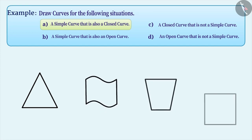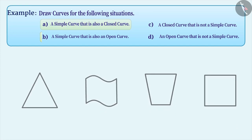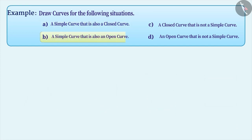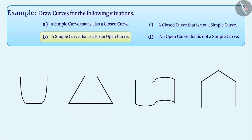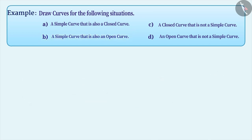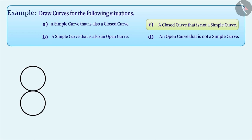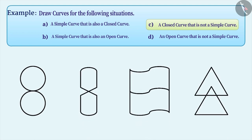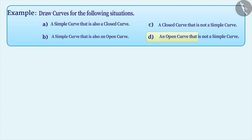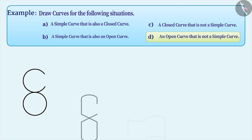Some more examples are as follows. A simple curve which is also an open curve can be made this way, with some more examples shown. Similarly, a closed curve which is not a simple curve can be made this way, with some examples shown. An open curve which is not a simple curve can be made this way, with some more examples.